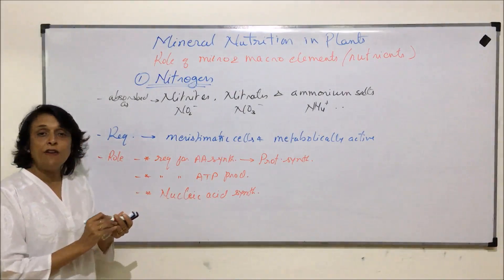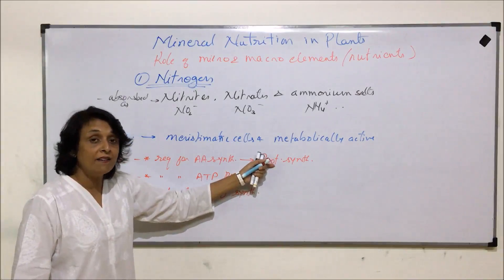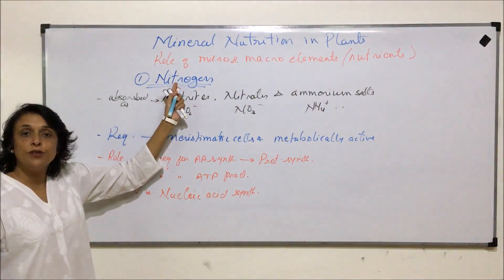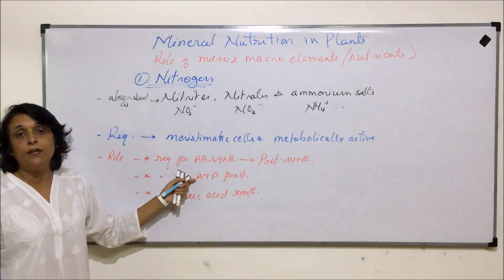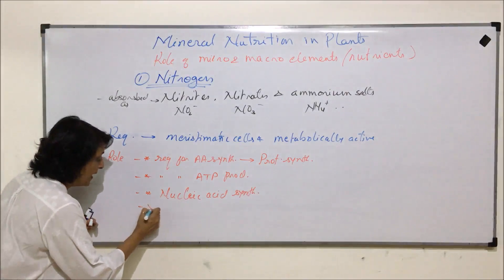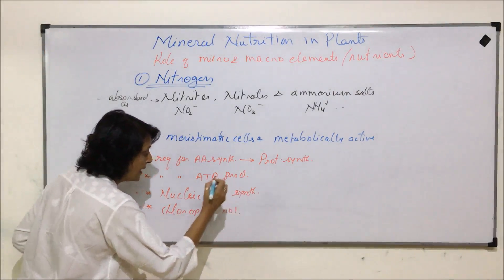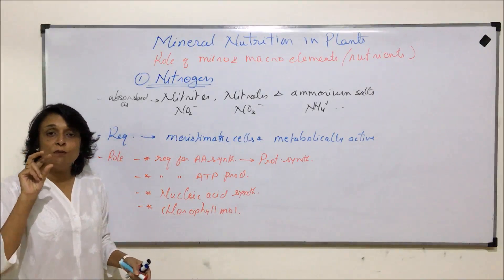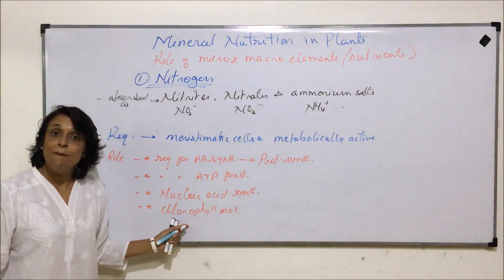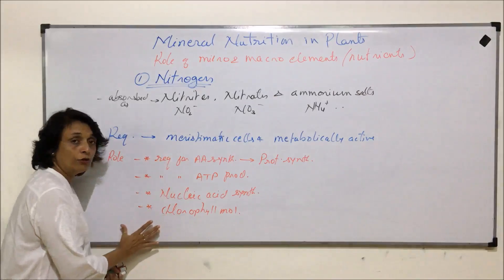So in summary: nitrogen is required for protein synthesis because proteins are made up of amino acids which have an amino group. It is required for ATP synthesis where the adenosine nitrogen base is involved. Similarly for nucleic acids. Nitrogen is also essential for the chlorophyll molecule — chlorophyll is made up of magnesium in the center with four porphyrin rings attached, each ring having a nitrogen atom attached to that magnesium. So if chlorophyll is to be synthesized, nitrogen must be available.